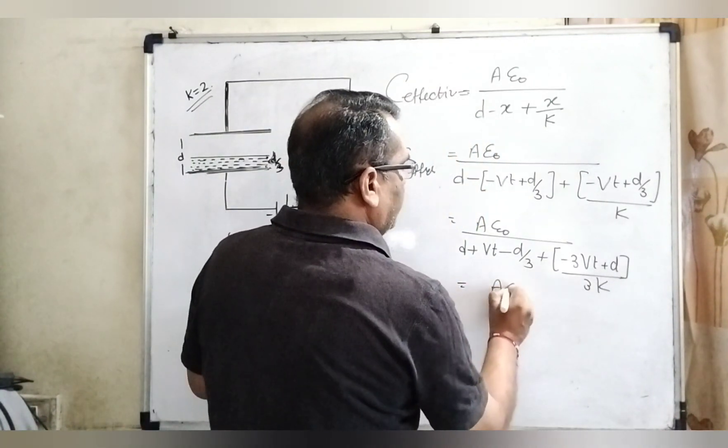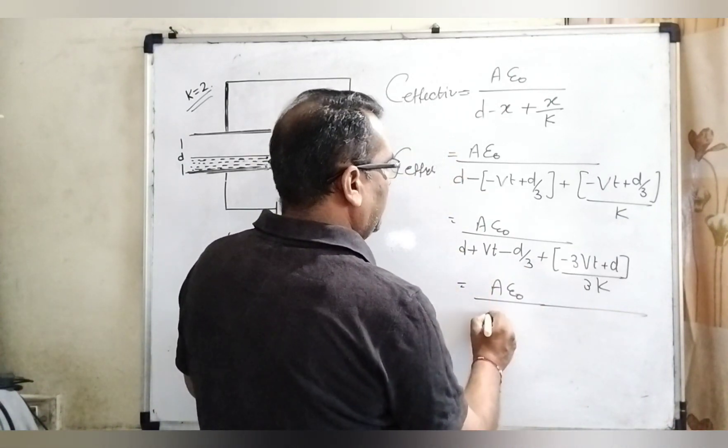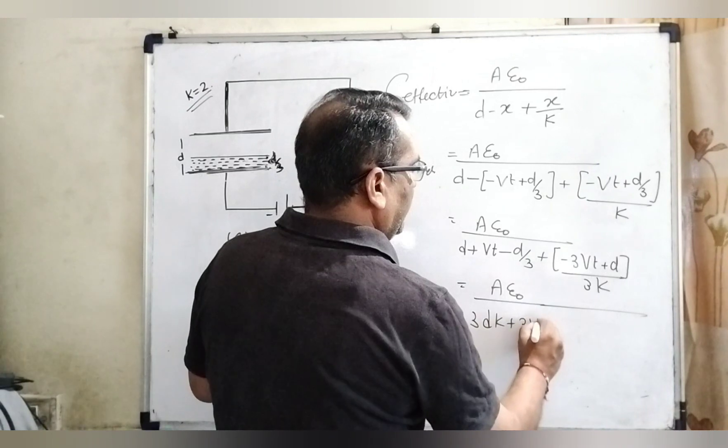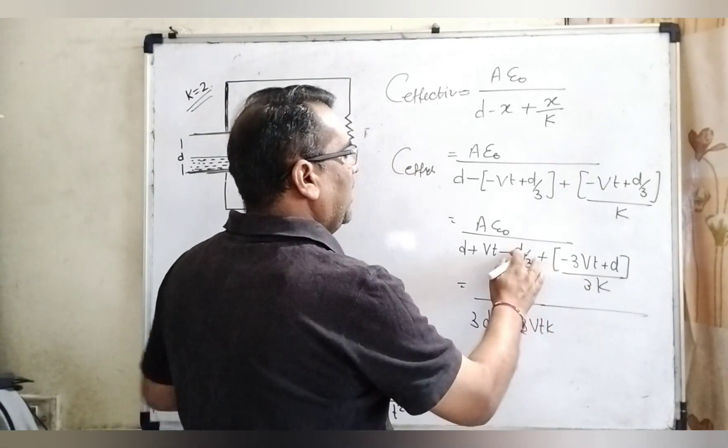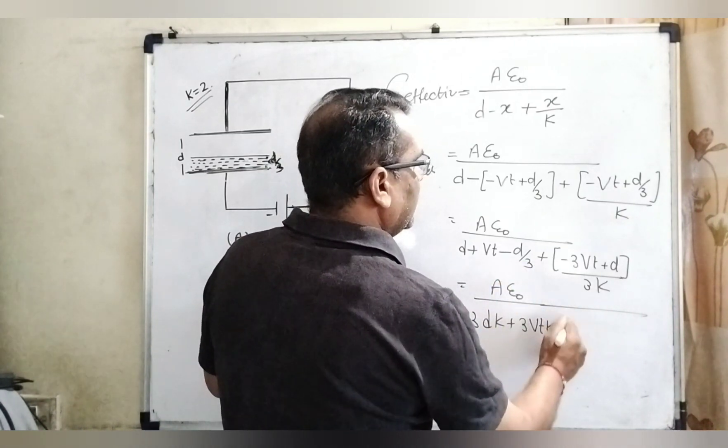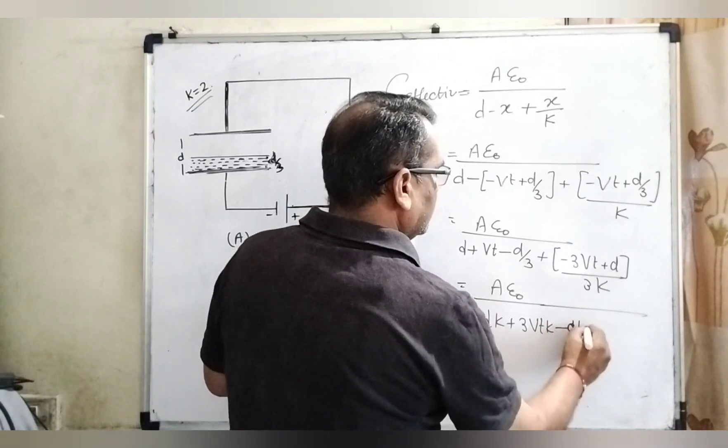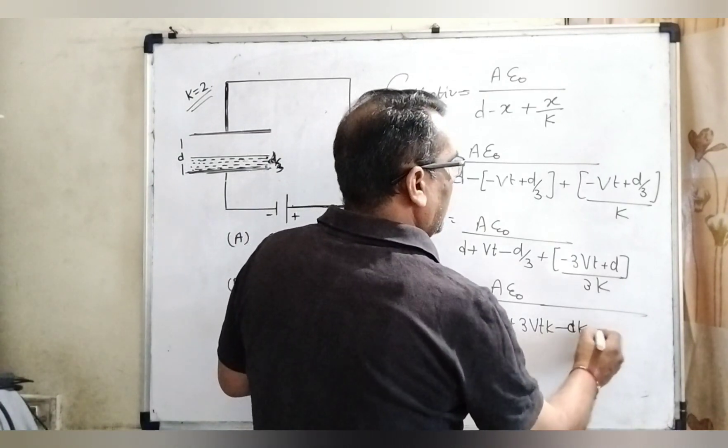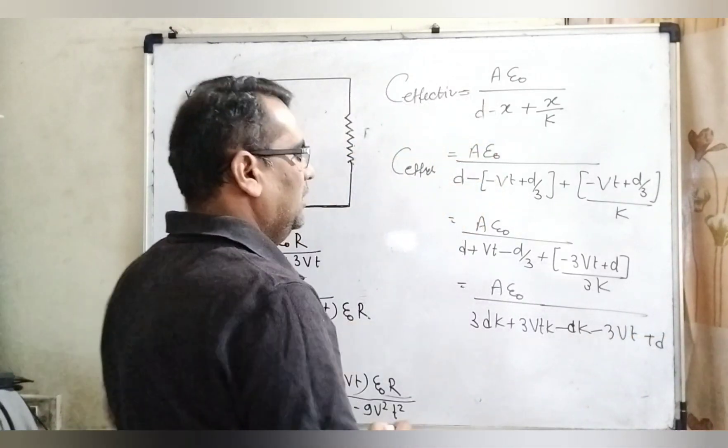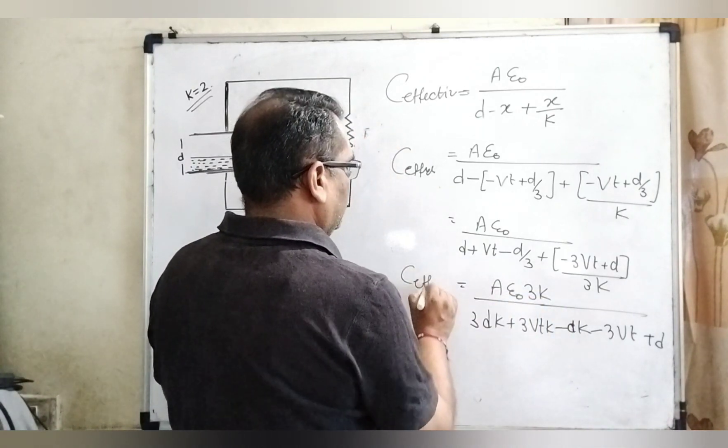Now, A epsilon 0, open the bracket: d plus Vt minus d by 3 plus minus Vt plus d over 3k. Now, A epsilon 0 over 3k multiply with d: 3dk plus Vt times 3k minus d.